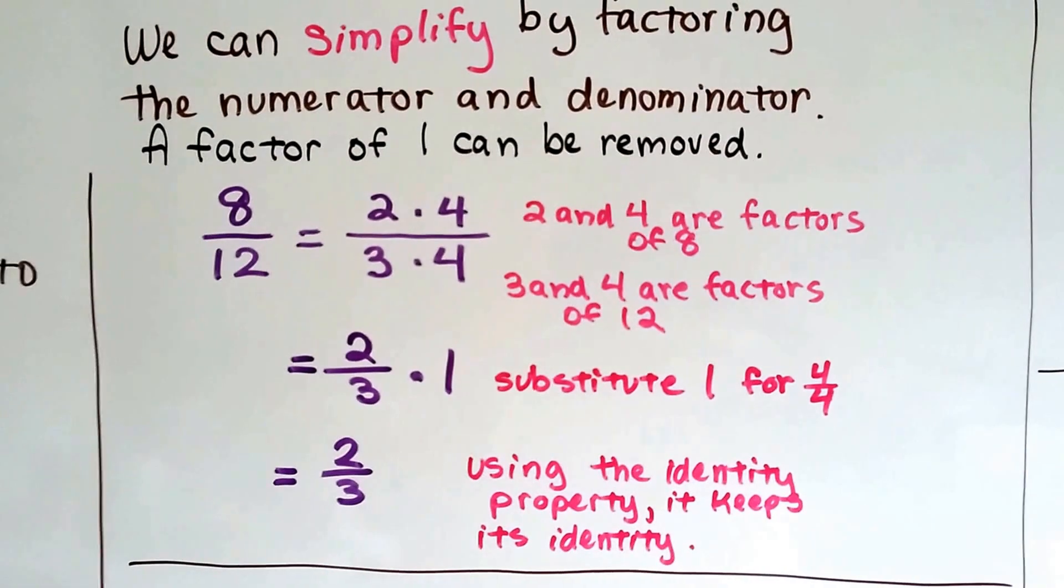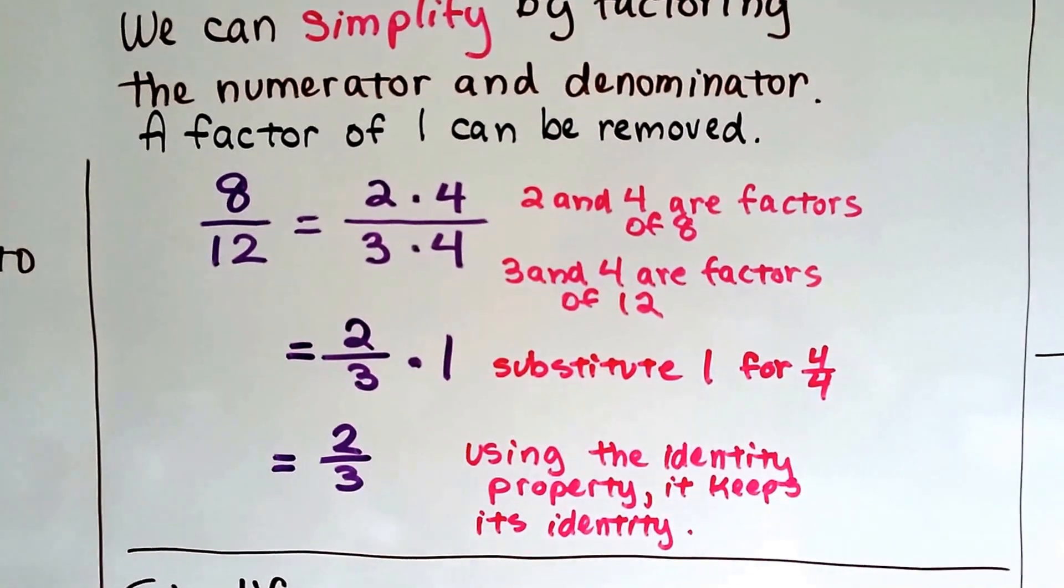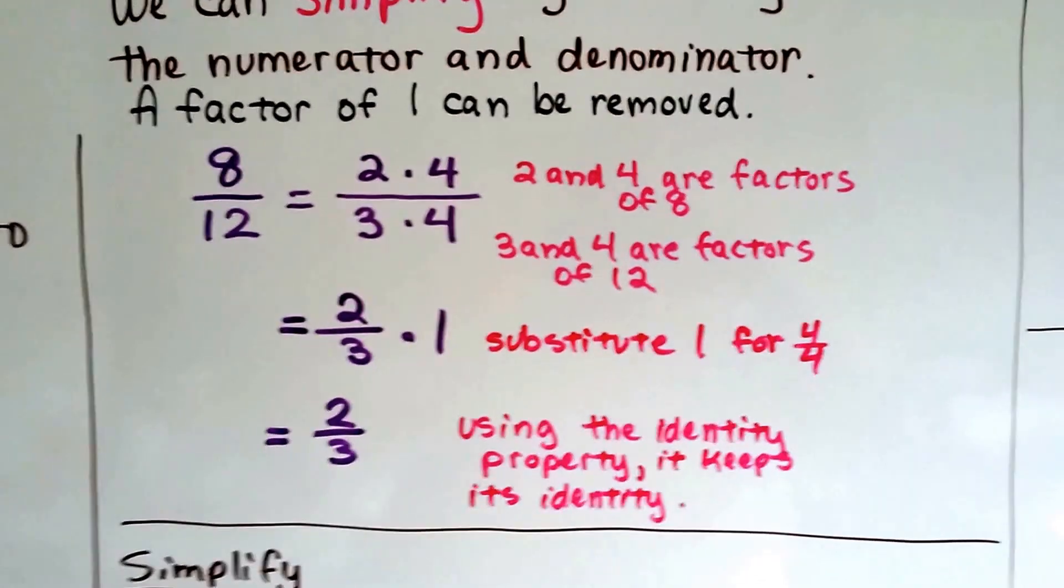And now we've got 2 thirds times 1. And because of the identity property, it keeps its identity, it's 2 thirds.